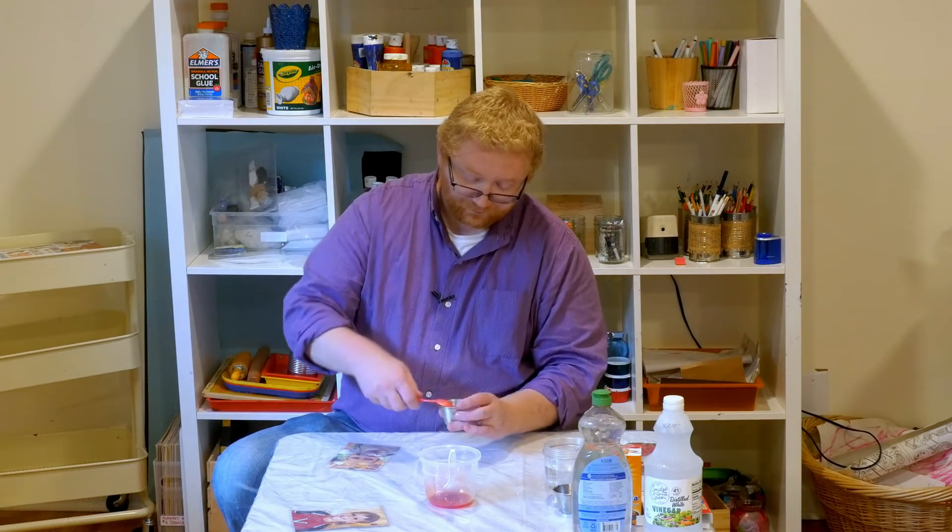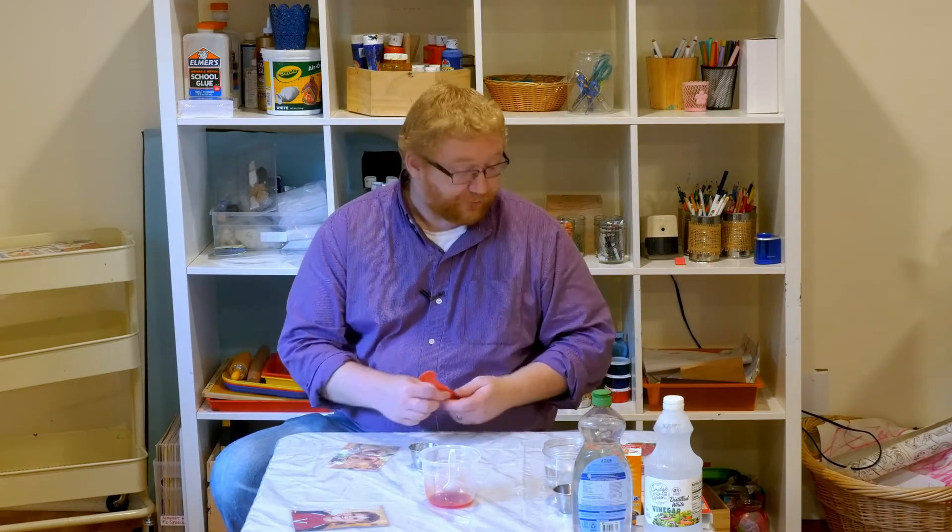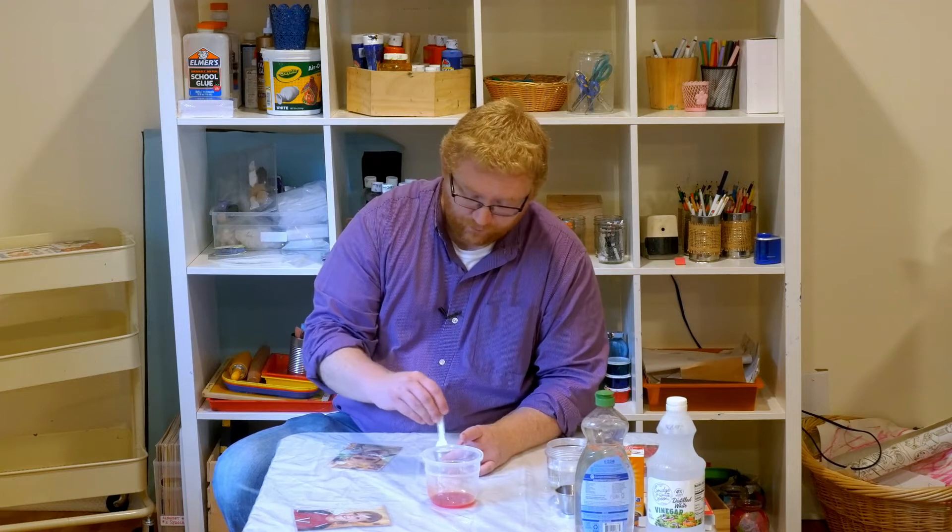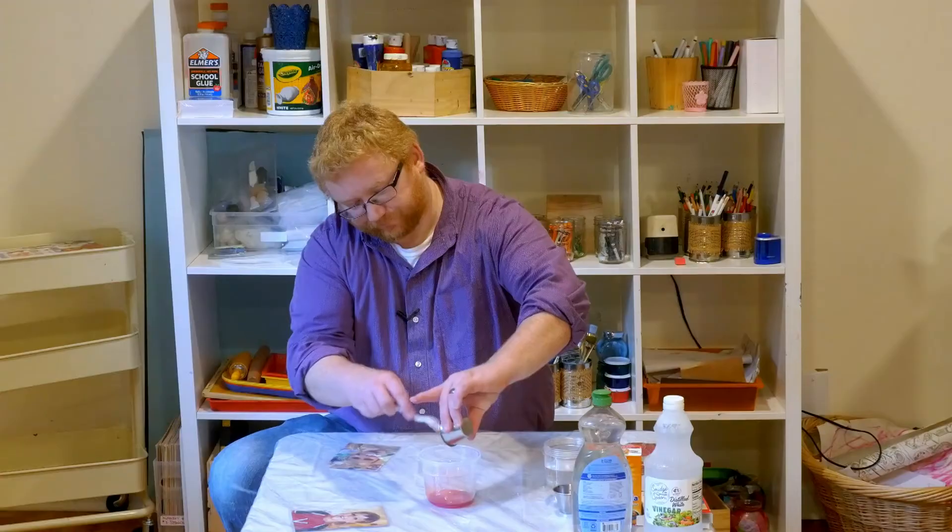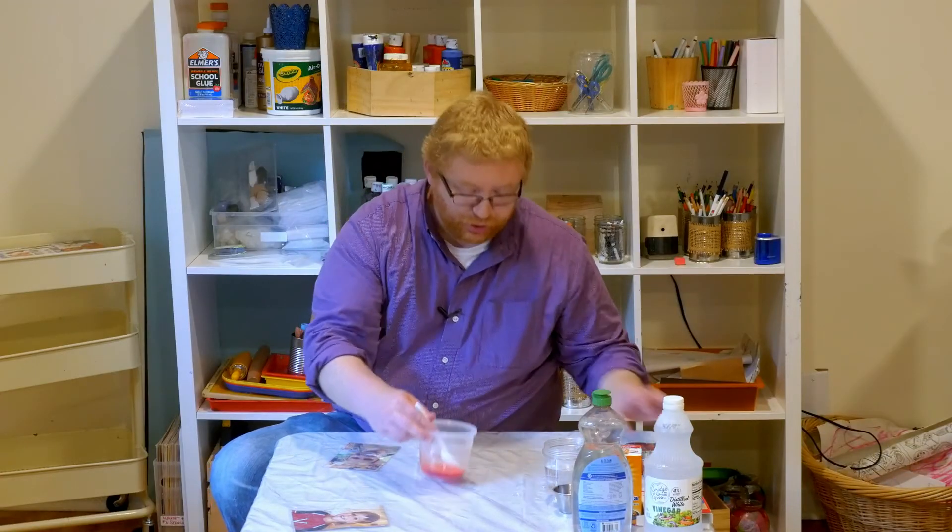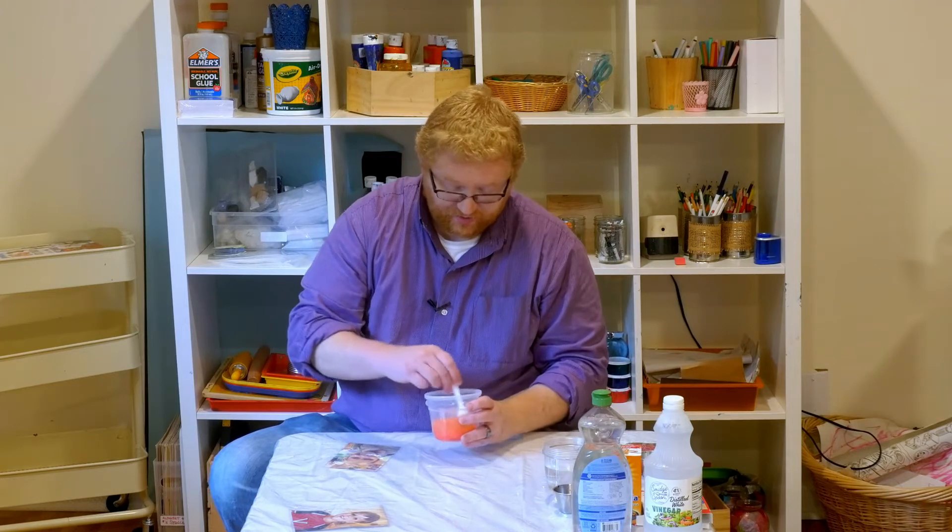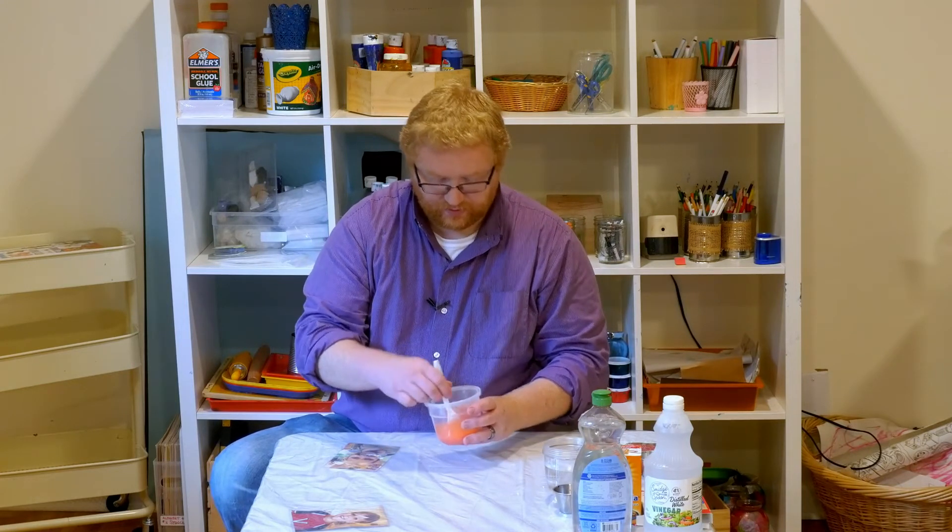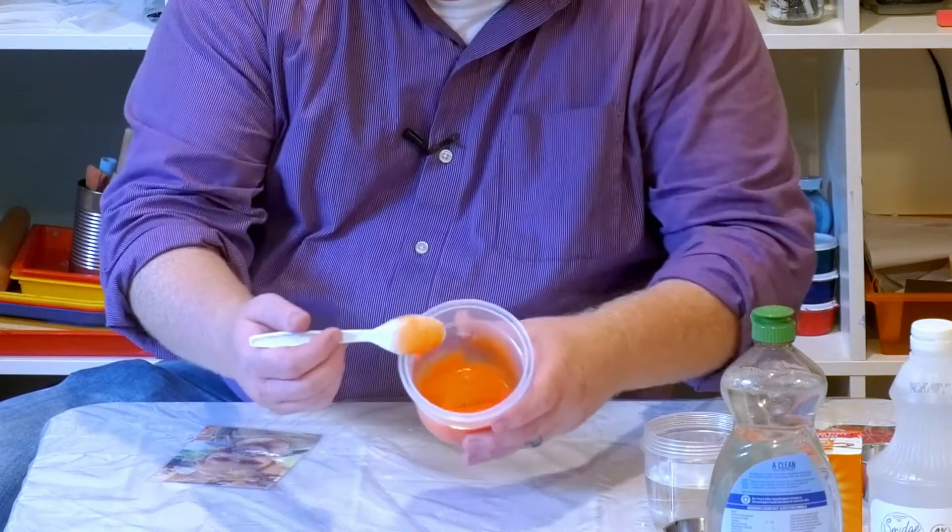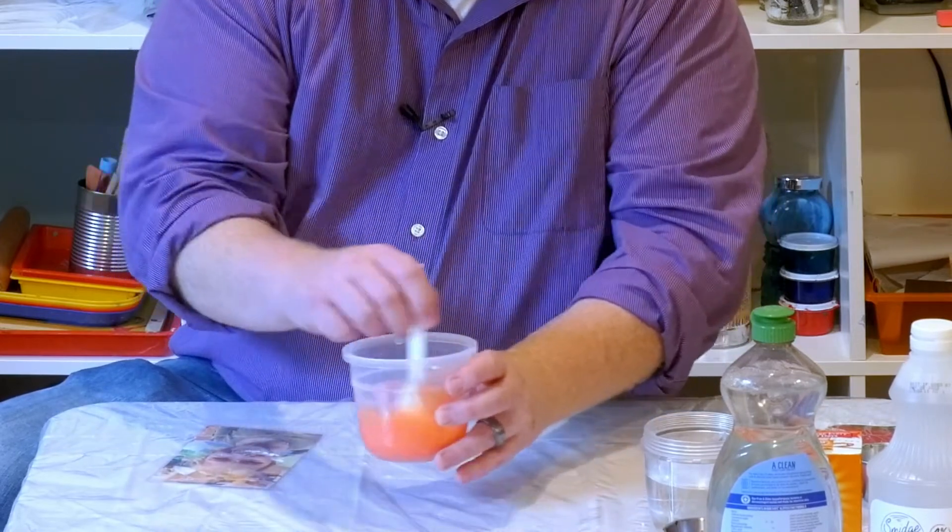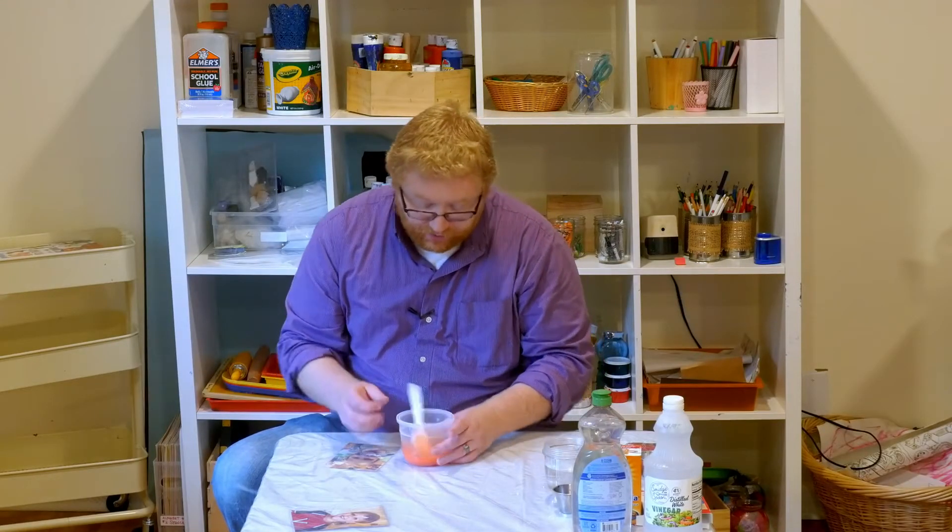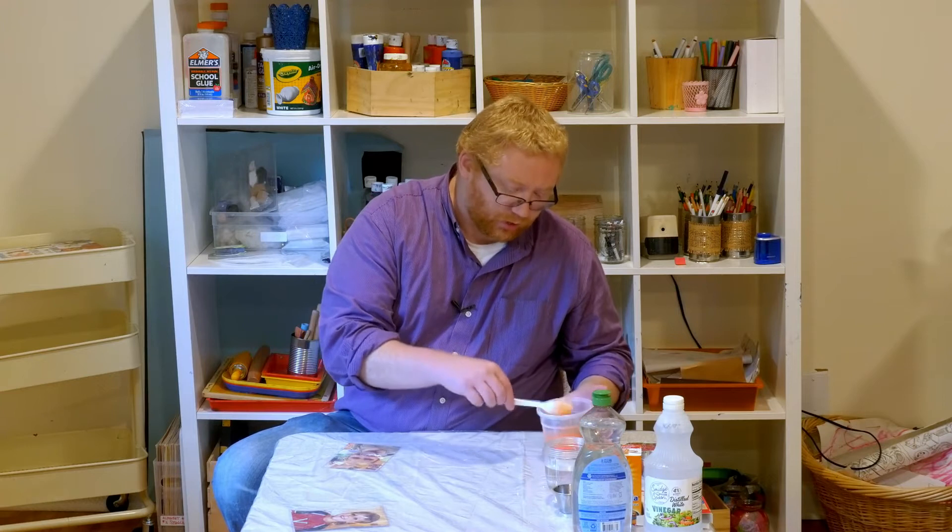All right, and what we have left to do is take our solution B and add it to solution A, and you're going to see that our solutions should start to bubble. You can kind of see that there, how it created bubbles. It does that because the vinegar and the baking soda mix together to make all those bubbles, and that's going to give our watercolor paint a little bit of texture.